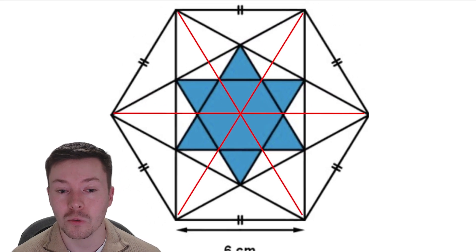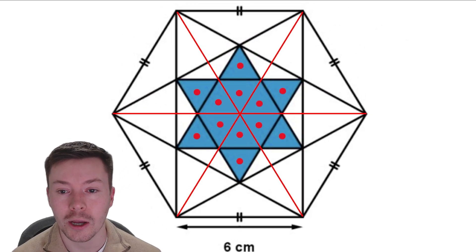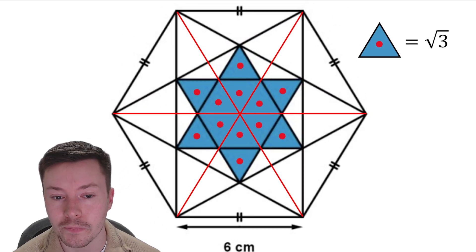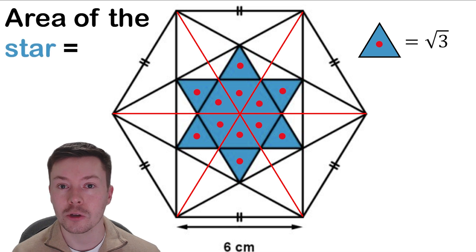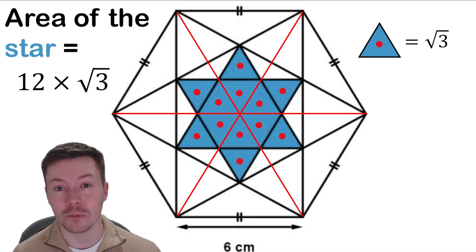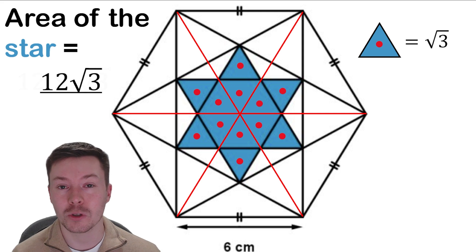So that means one of those triangles has got an area of √3. We have got 12 of those triangles to make up our star. So 12 times √3 is 12√3.